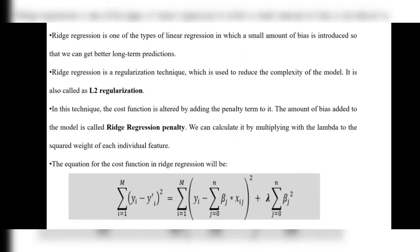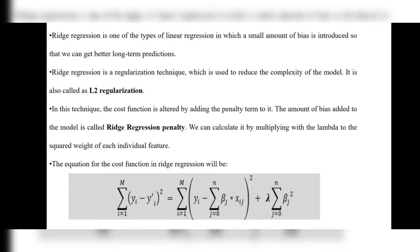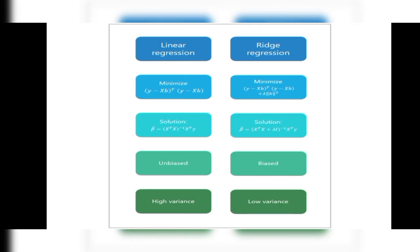The amount of bias added to the model is called the ridge regression penalty. We calculate it by multiplying lambda by the square of the weight of each individual feature. The equation for the cost function in ridge regression includes a minimize formula. By solving this formula we arrive at the ridge regression cost function equation.